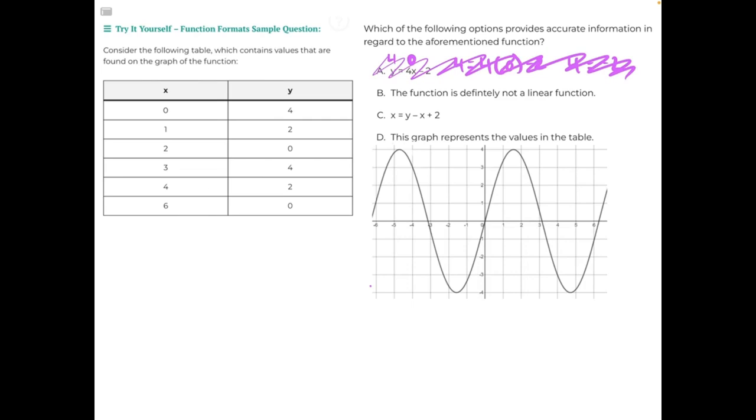That's a good method to use if you are stuck and you need to eliminate answer choices, but I feel that the fastest way to get to our correct answer is just by analyzing our table right here. If we take a look at our x values, we can see that the x values are increasing at a consistent rate, which indicates that we're looking at a linear function, a straight line that is going infinitely in the positive direction.